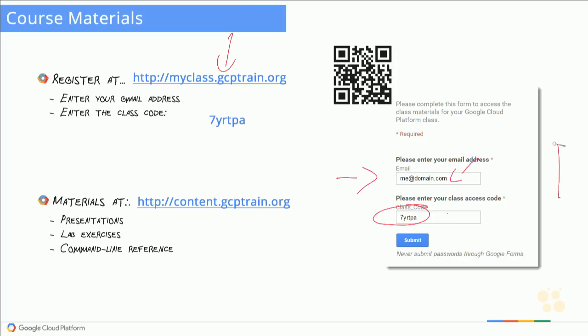Those materials are always going to be the most up-to-date. As Google updates and refreshes this course over time, you can always log back in to content.gcptrain.org to access all content for all courses you've registered for. If you already went through CP100, signing in with this code will show you both CP100 and CPD 200 materials.